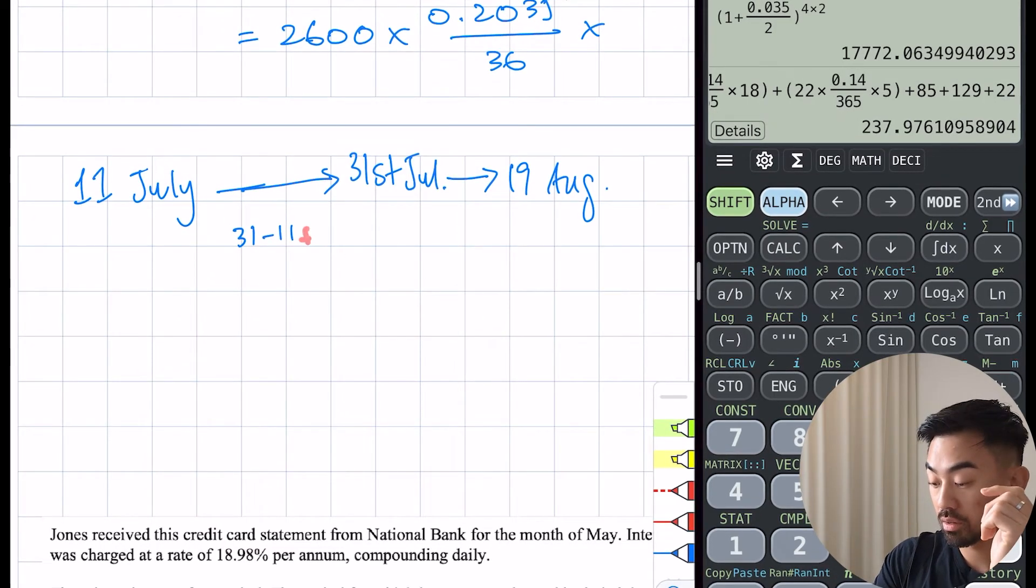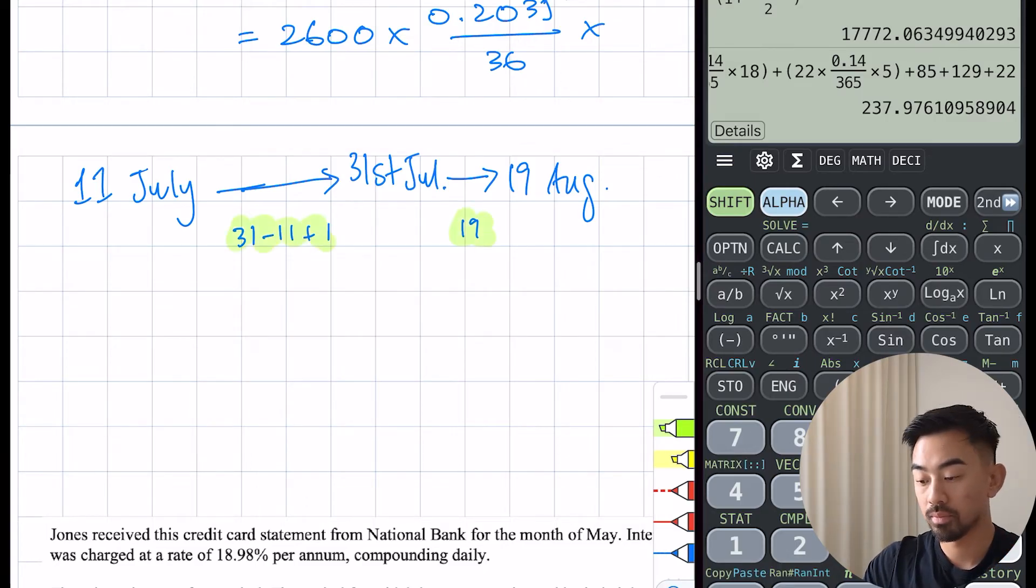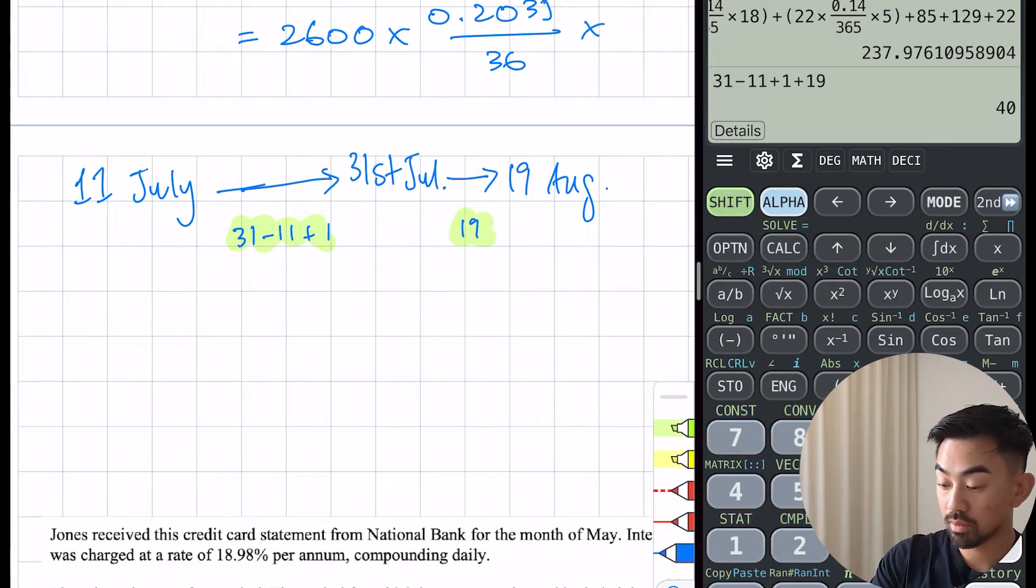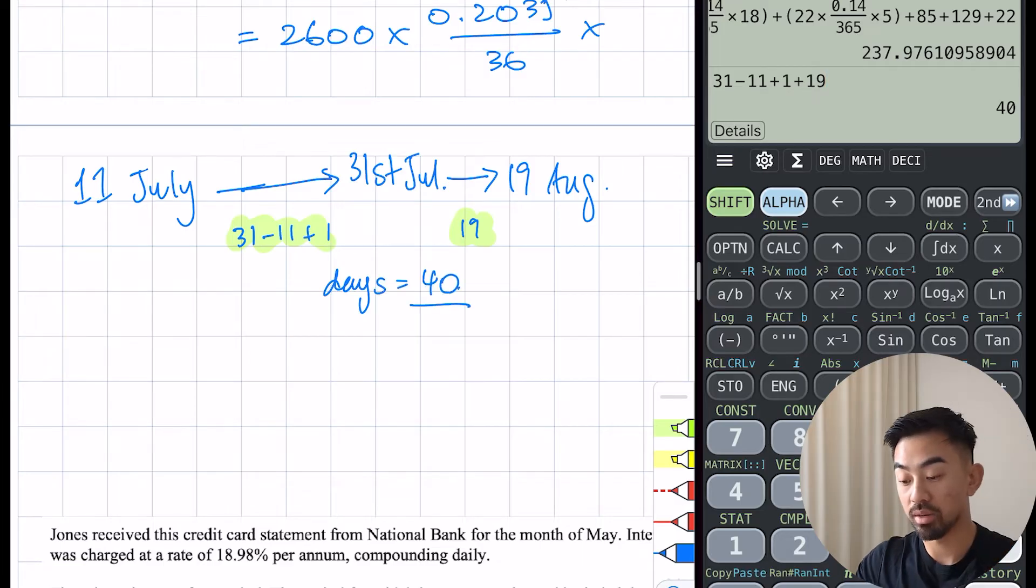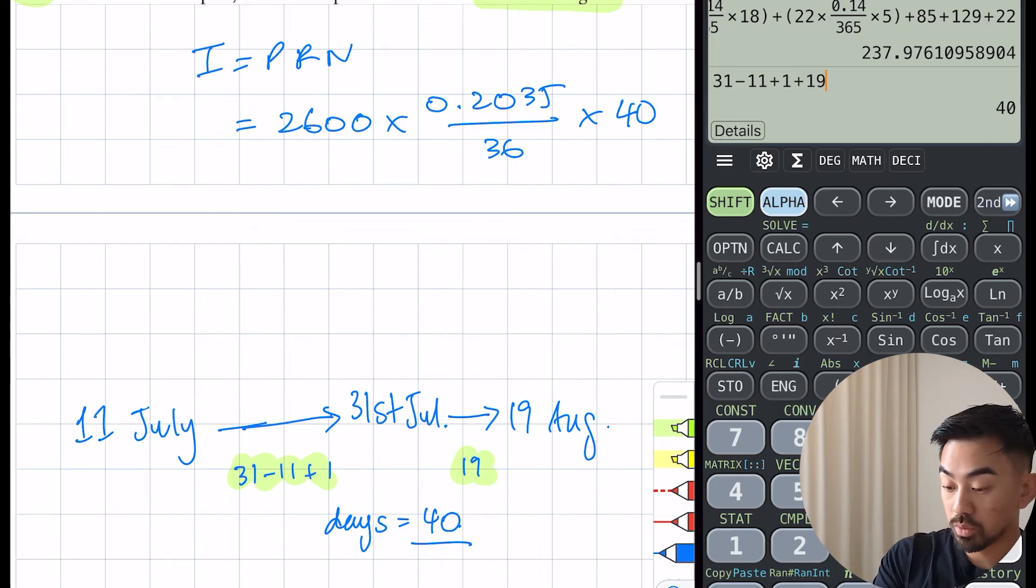How many days from the 11th till the 31st? The previous method we said it's 31 minus 11, but because we actually include this day of purchase, I'm going to have to plus an extra one here. From this bit onwards, from the 1st of August to the 19th of August is simple - it's just going to be 19 days. So the number of days here is just going to be all these added together. Let's quickly work that out: 31 minus 11 plus 1 plus 19, that is going to be 40 days.